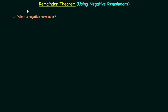In the previous lecture we saw how to obtain the remainder using the remainder theorem, and in this lecture we are going to do the same thing. We will follow the remainder theorem to find the remainder, but this time we will use negative remainders. Before solving a few examples, we will first understand what we mean by negative remainders — and to understand those, we first need to understand positive remainders. Let's take one simple example.